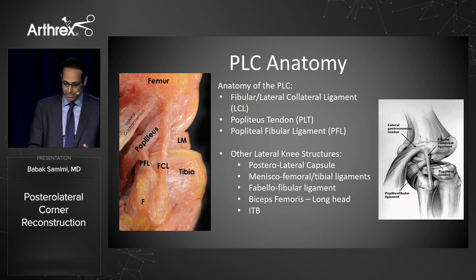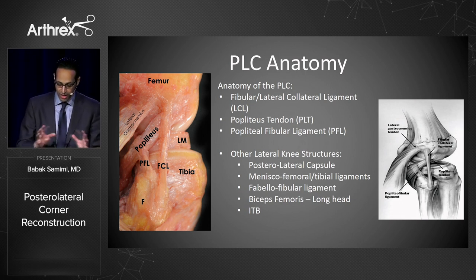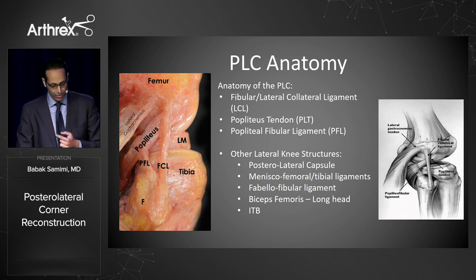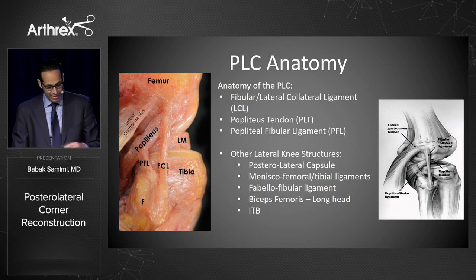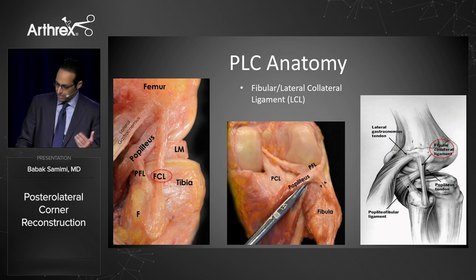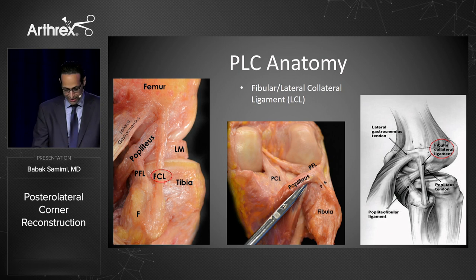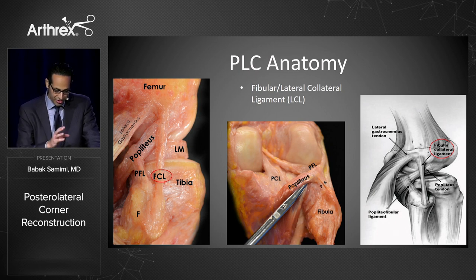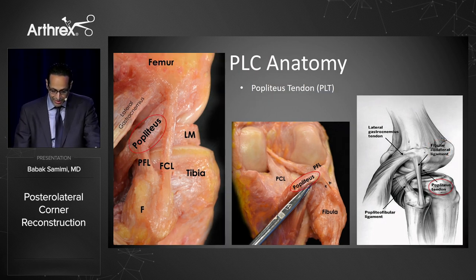A quick review of some anatomy of the posterolateral corner: there are many structures here, but the three we most focus on are the fibular or lateral collateral ligament (FCL), the popliteus tendon, and the popliteofibular ligament. The fibular collateral ligament is the primary varus stabilizer, and you can see in this anatomic dissection by Dr. LaPrade that it inserts more proximal and posterior on the lateral epicondyle.